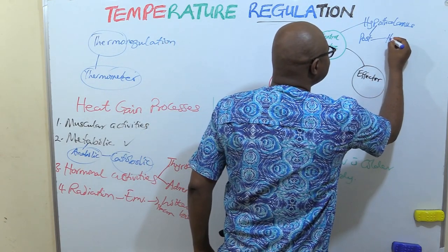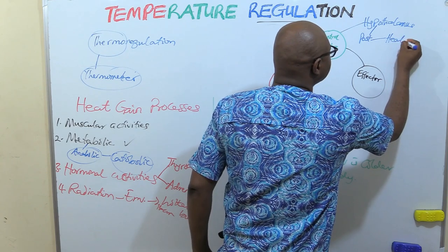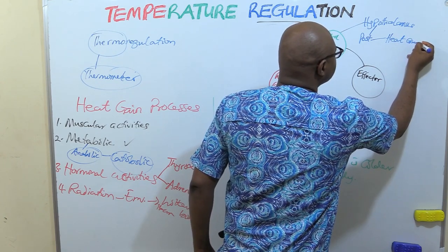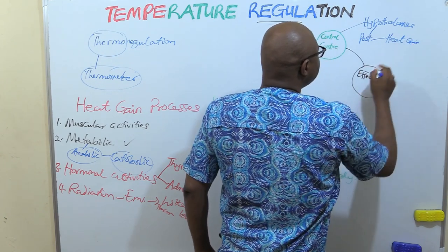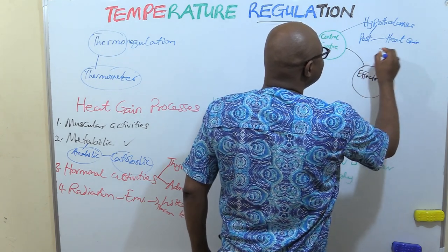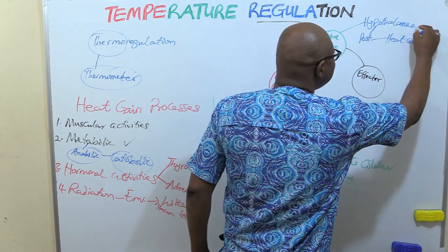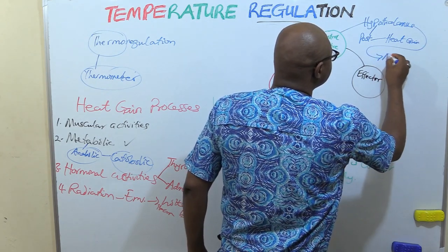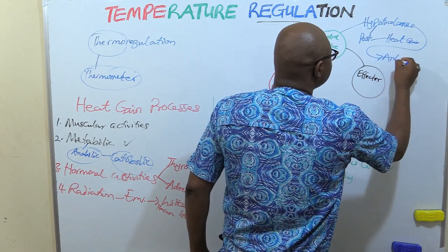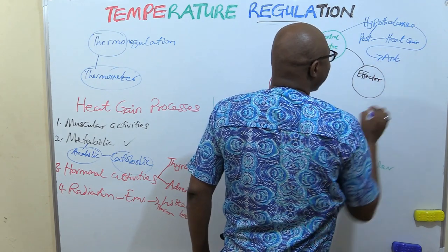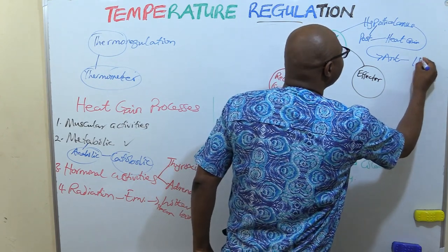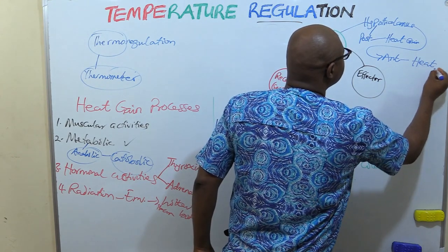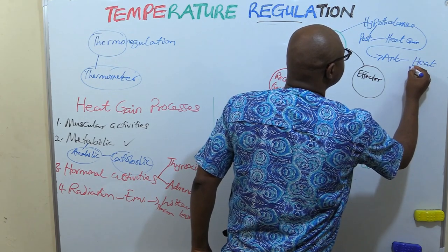The posterior hypothalamus is the heat gain center, and the anterior hypothalamus is the heat loss center.